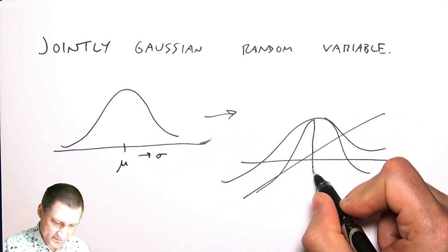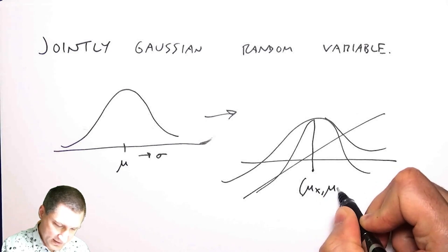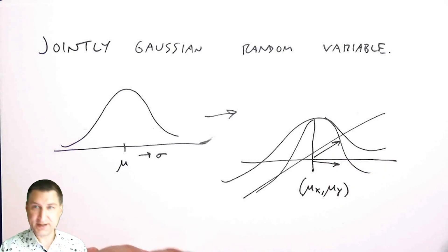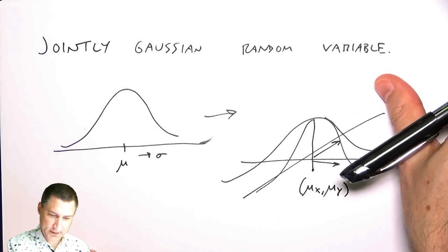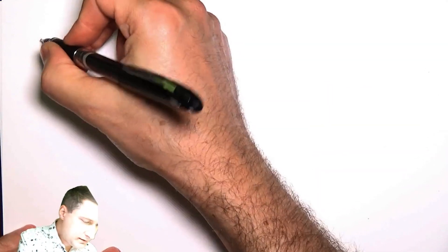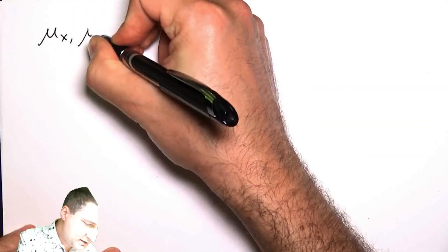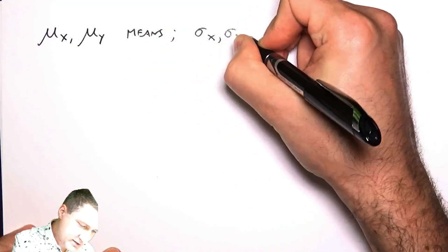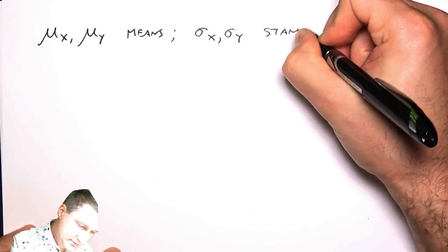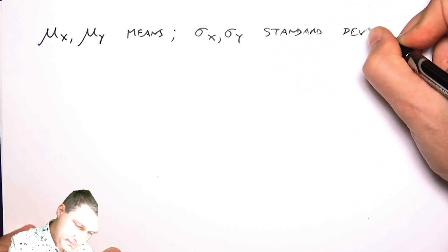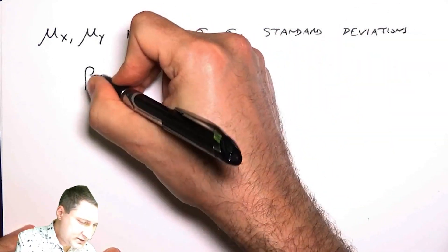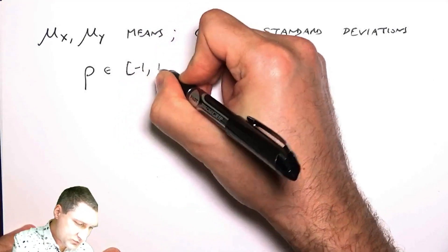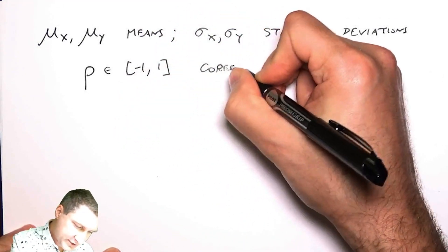In 2D there are more things to specify. There's basically going to be the mean of x and the mean of y, and then there's going to be a sigma in the x direction and a sigma in the y direction, and even one more parameter. We will need the sigmas, which are the standard deviations in x and y, and then we're going to need this new parameter rho.